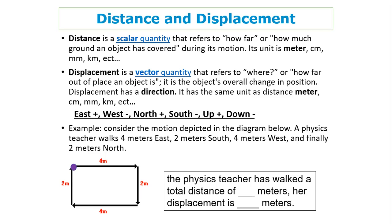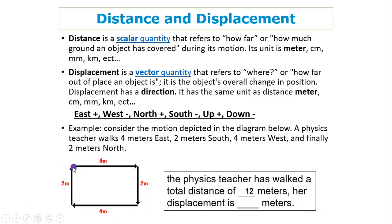Let's look at an example. A physics teacher walks 4 meters east, 2 meters south, 4 meters west, and 2 meters north. The physics teacher has walked a total distance of 4 + 2 + 4 + 2 = 12 meters. Her displacement is 0 meters because the teacher starts and ends in the same place — there is no change in displacement.